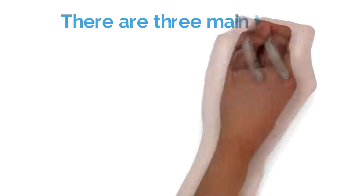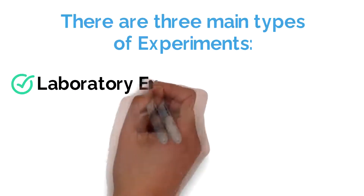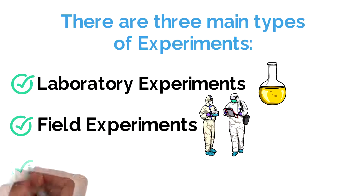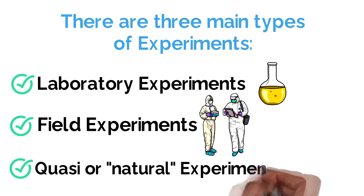There are three main types of experiments: laboratory experiments, field experiments, and quasi- or natural experiments.